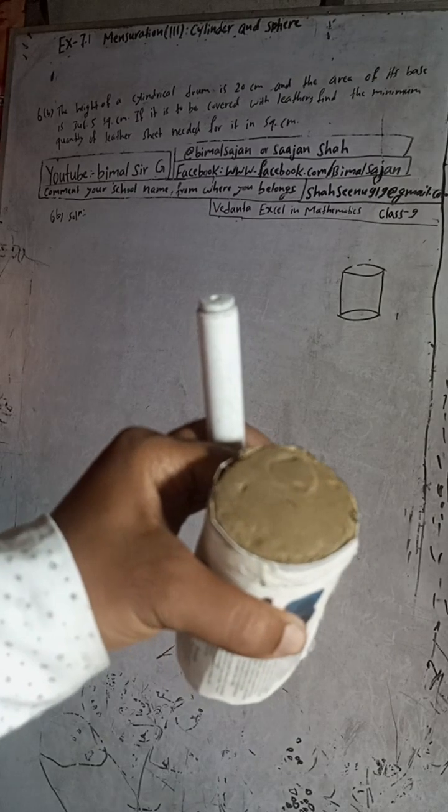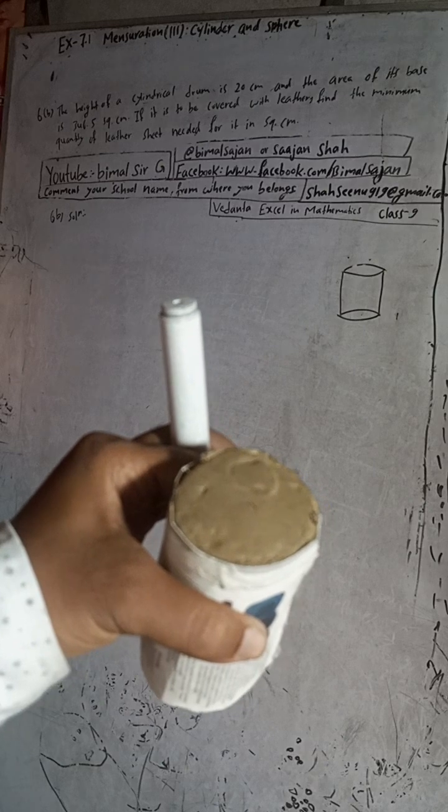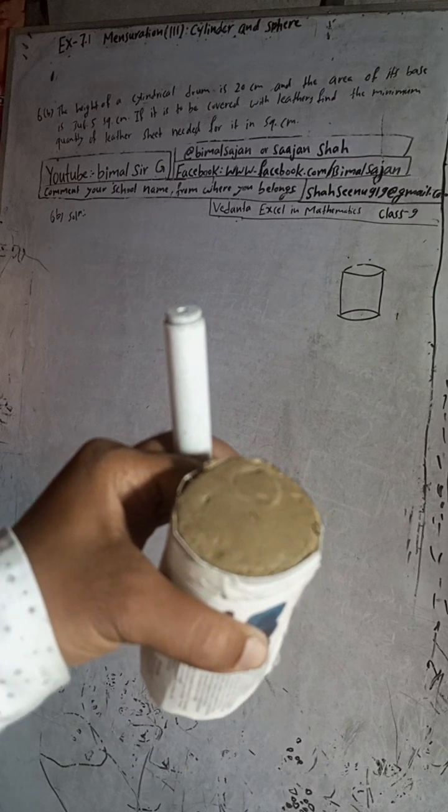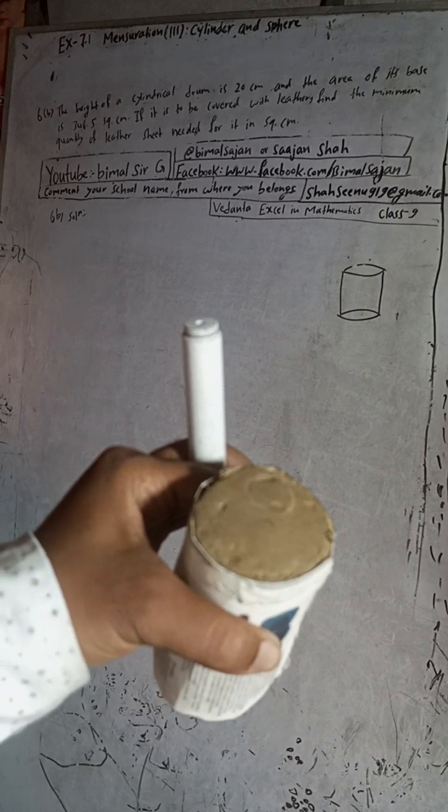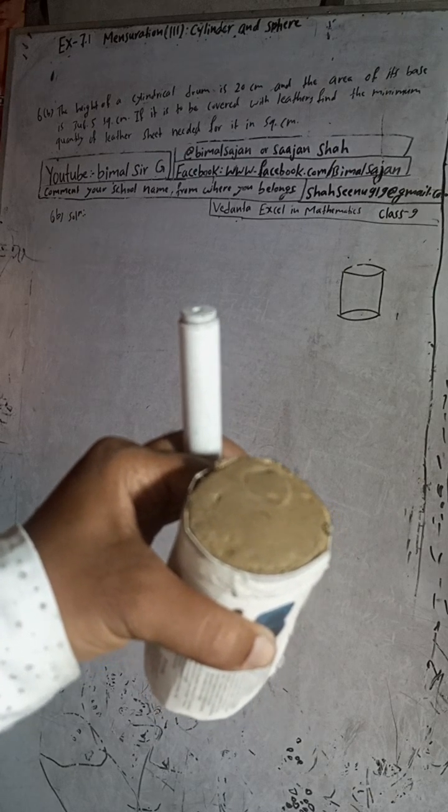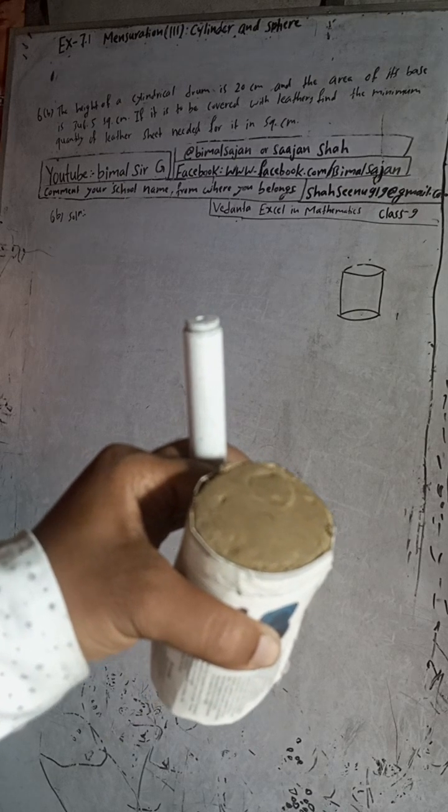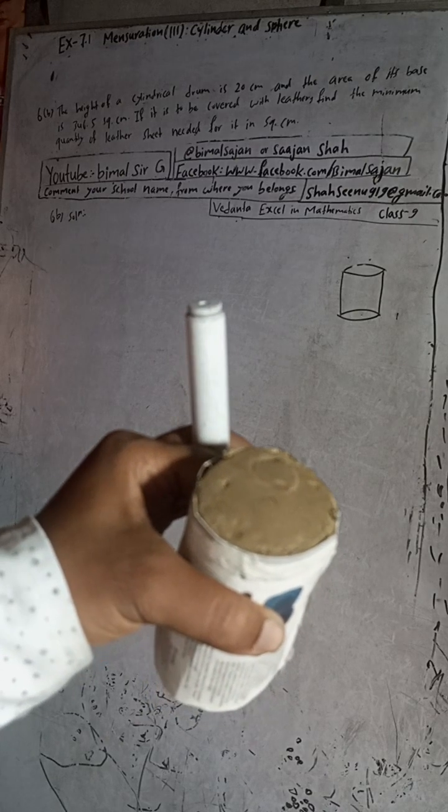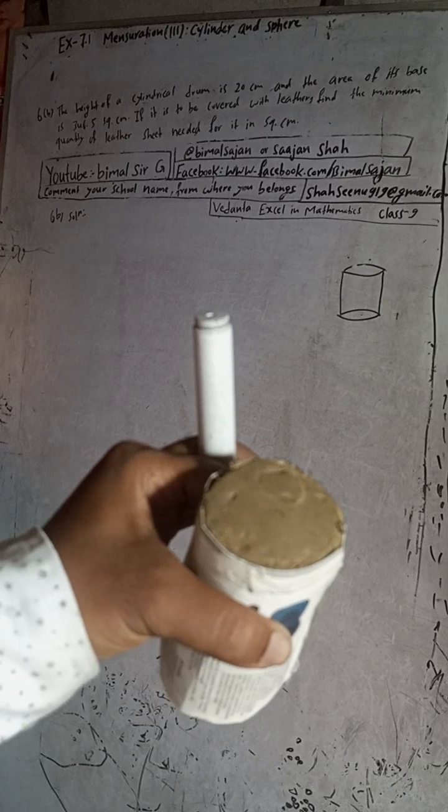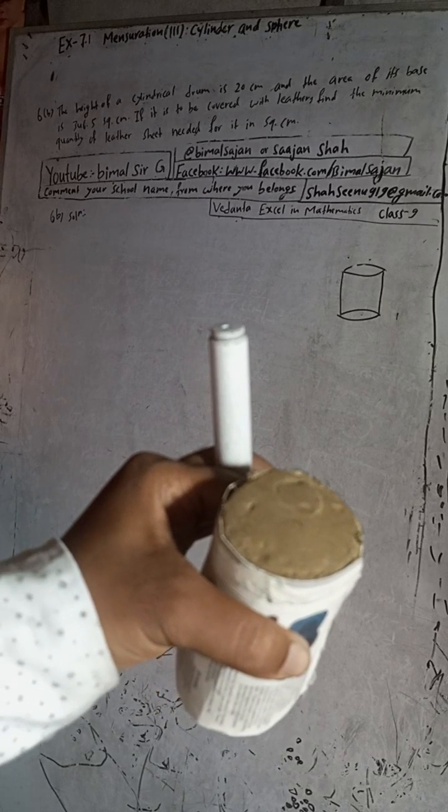Hi class 9 and 10 students, welcome back to Bimal Sir's YouTube channel. This is question number 6b solutions, exercise 7.1, mensuration third part, cylinder and sphere. The question is: the height of a cylindrical drum is 20 cm and area of its base is 346.5 square cm. If it is to be covered with leather, find the minimum quantity of leather sheet needed for it in square cm.